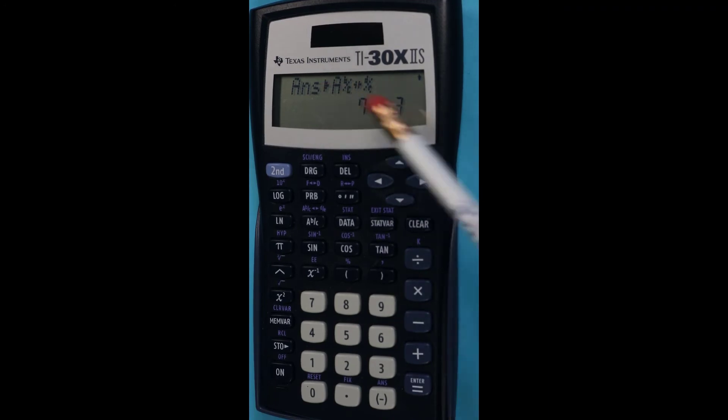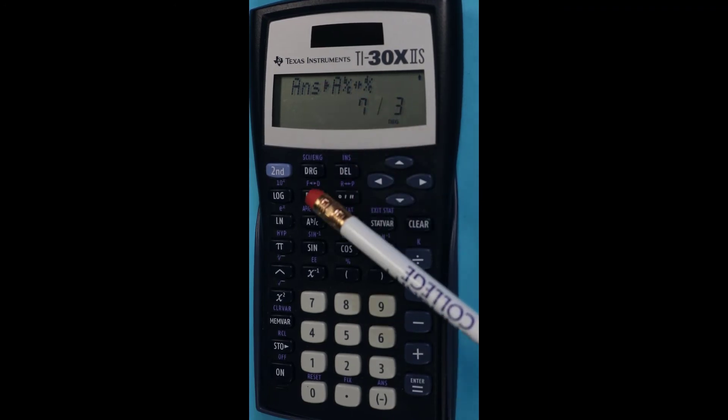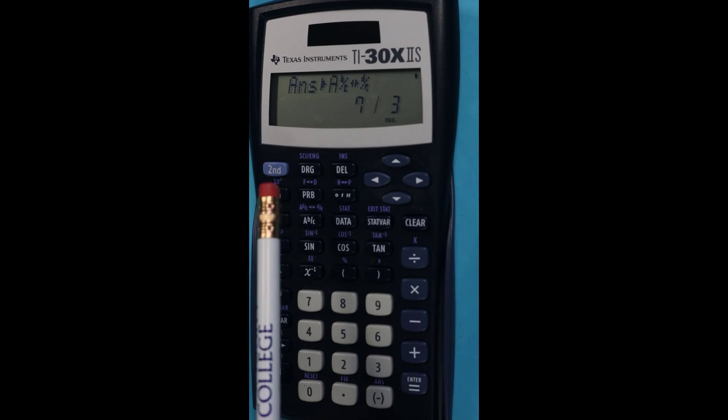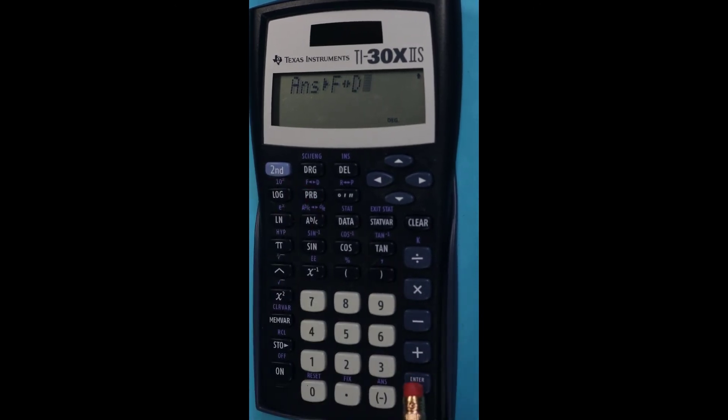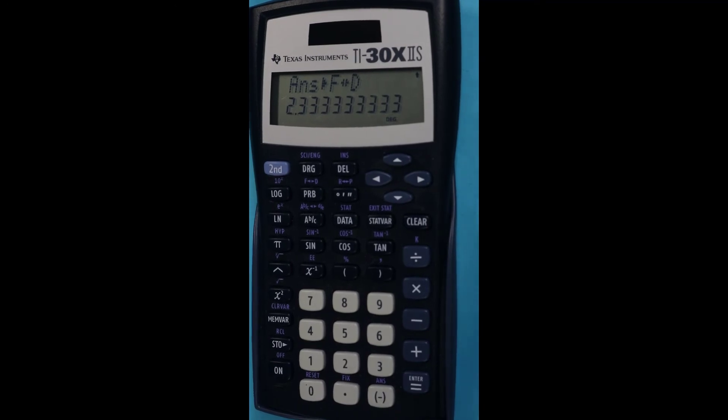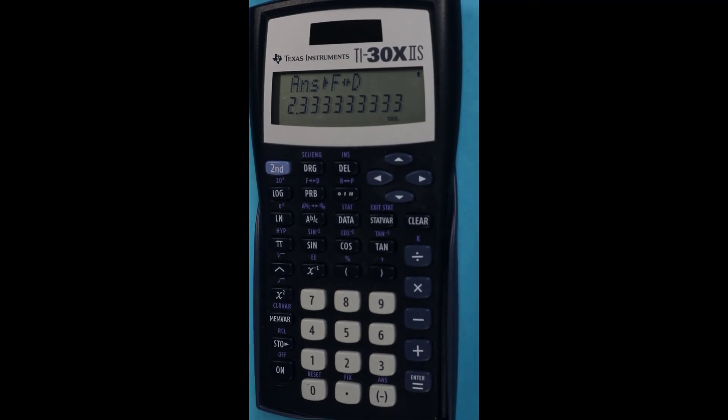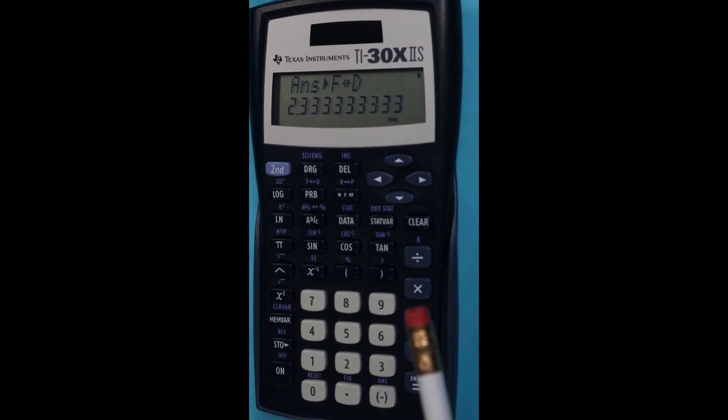So we went from mixed to improper, and now I want to go from fraction form to decimal form. So I'm going to go to this F double arrow D, and again I need a second function, and I'm going to press enter.